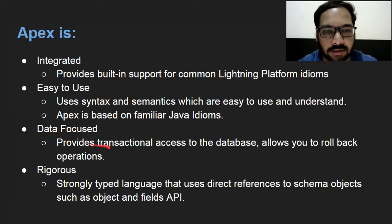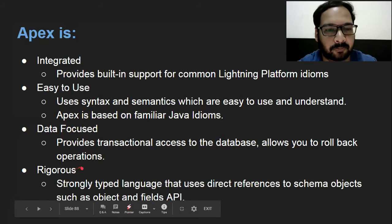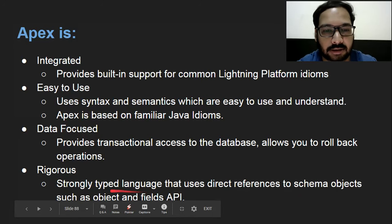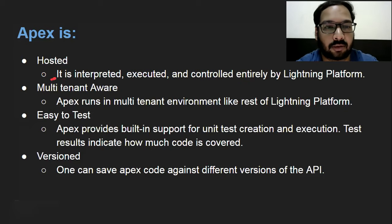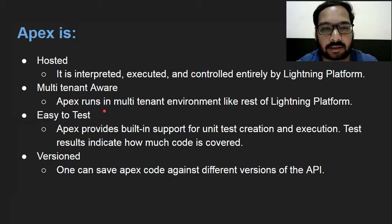Next point is data focused — Apex provides transactional access to the database and allows you to roll back operations. It is also a rigorous, strongly typed language that uses direct references to schema objects such as objects and fields API. Then, hosted: Apex is interpreted, executed, and controlled entirely by the Lightning Platform. Multi-tenant aware: Apex runs in a multi-tenant environment, like the rest of the Lightning Platform.